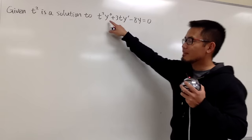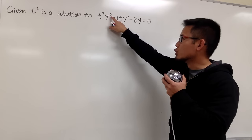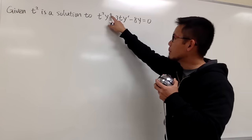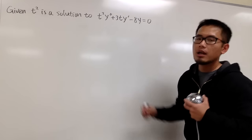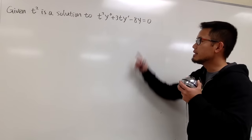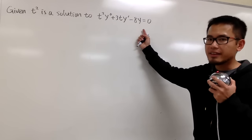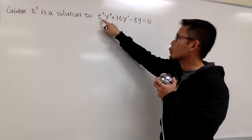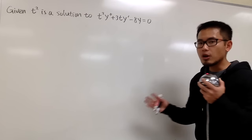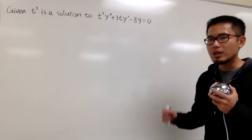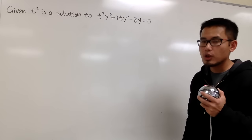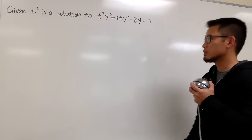Notice that we have a second order because of the second derivative here, and this is linear because y', y', and y are all to the first power. But in this case, the coefficients are not constants because we already see we have a t squared and a 3t here. So we have a second order linear differential equation with variable coefficients.